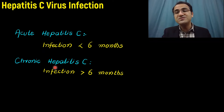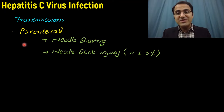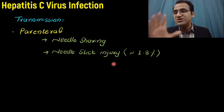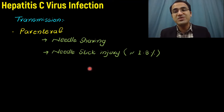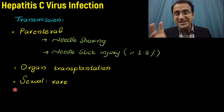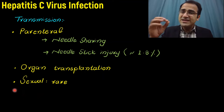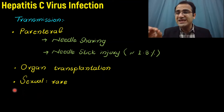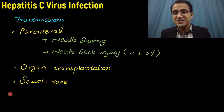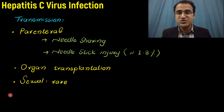Transmission of hepatitis C virus occurs mainly through the parenteral route. Needle sharing and IV drug use can result in HCV infection. Needlestick injury in a healthcare worker carries a 1.8% chance of transmitting HCV. Organ transplantation is also a route of transmission. Sexual transmission of HCV is very rare and can only occur when there is serious damage to the genital area with contact of fluids with blood.